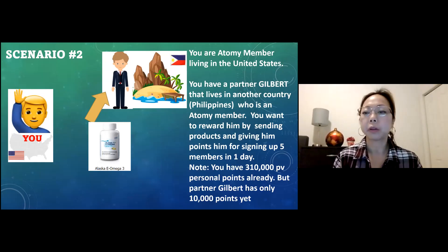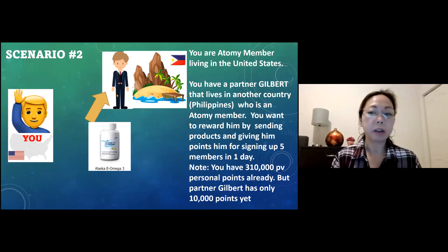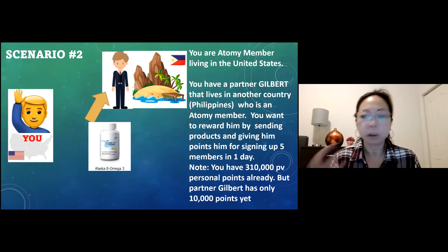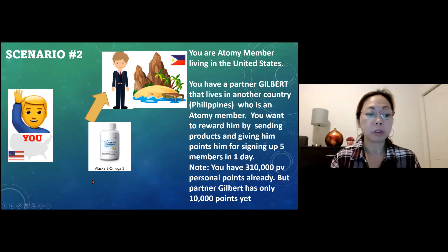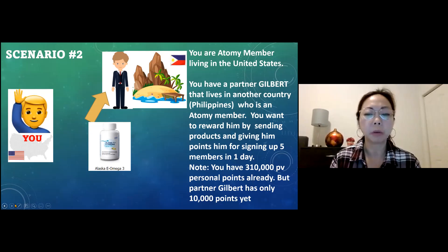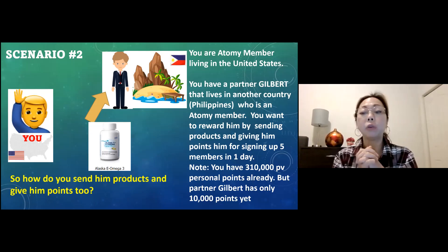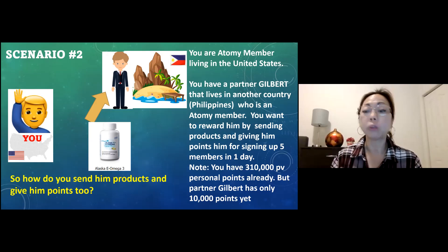Scenario two: you're an Atomy member in the US and you have a partner in the Philippines named Gilbert who is an Atomy member. You just signed him up, but he's already signing up five members a day, attending Zoom meetings, and purchasing. You already have 310,000 points, so you're an agent, but Gilbert has only 10,000 points. You want to reward him by sending him products and also giving him the points for all his great effort.